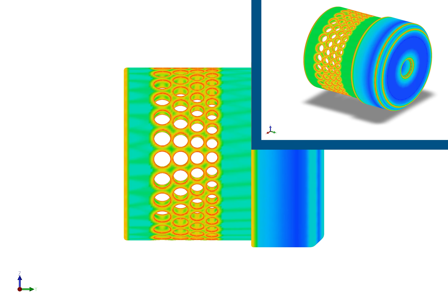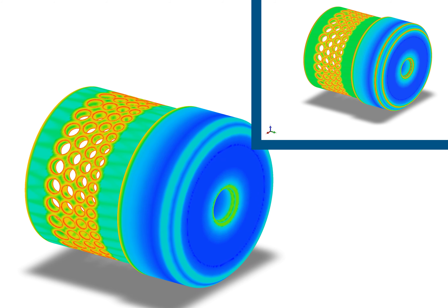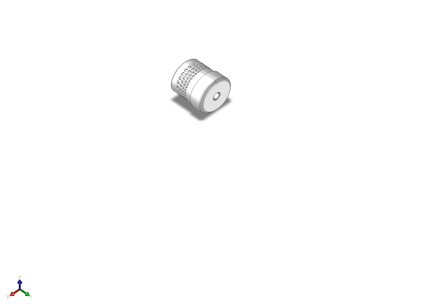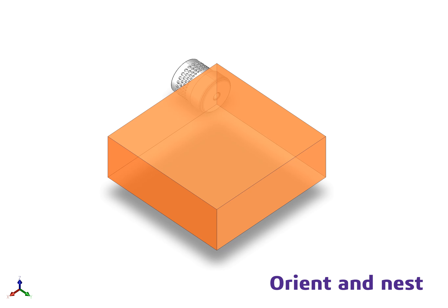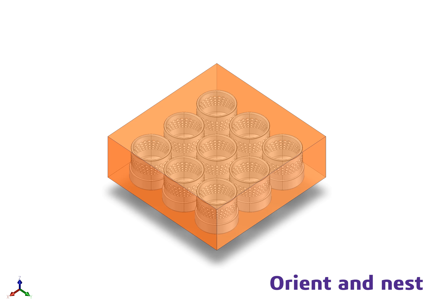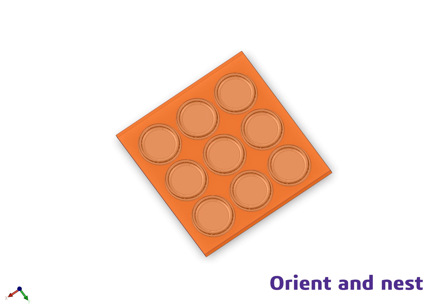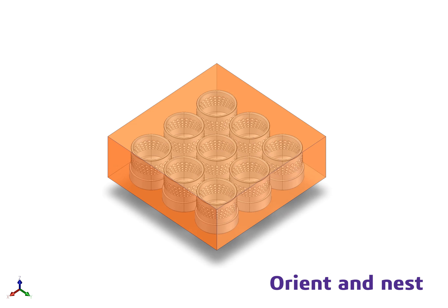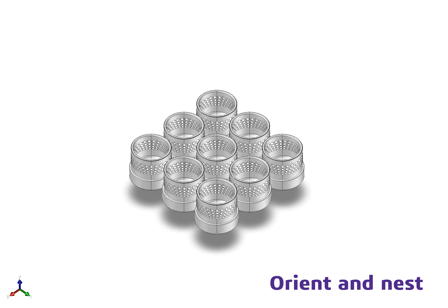Spatial's SDKs allow you to build 3D applications which support quick and easy editing for manufacturability. Using Spatial's Orient and Nest operator, one can optimize the number of models which can be printed on a given bed at the same time in an optimized orientation that minimizes support material use.